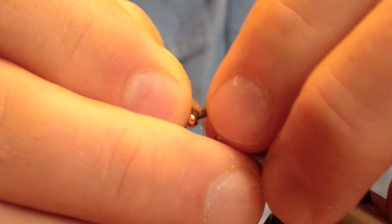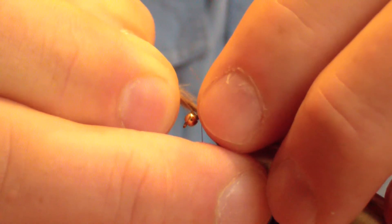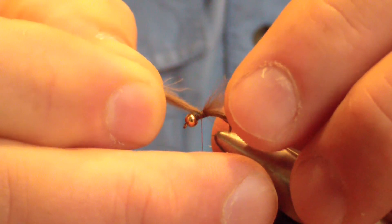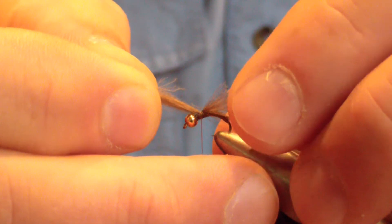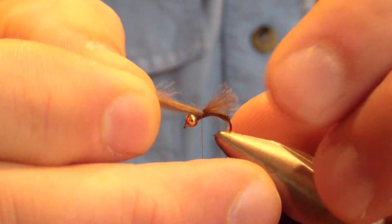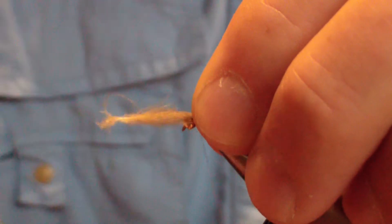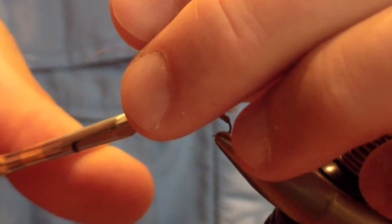Then grab the butt end and pull it up, pulling those fibers to where they're just about even with the bend of the hook. You don't want to bring it shorter than the bend. Right there. Clip off the butt ends.